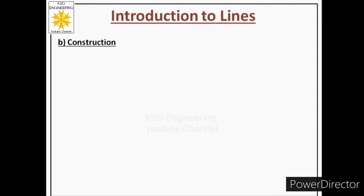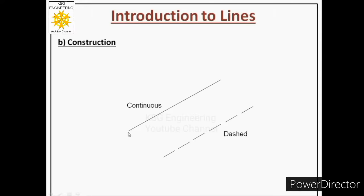Next, we will discuss the second point of difference between any two lines — based on their construction. If two lines have the same weight, we compare their construction. One may be a continuous line, with no break from start to end. Another is a dashed line, which has many breaks from start to end, consisting of many dashes. That is why its construction is called dashed.